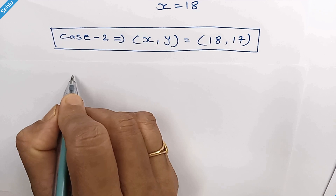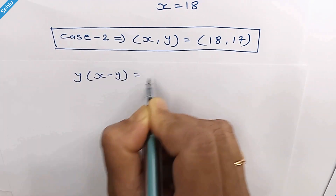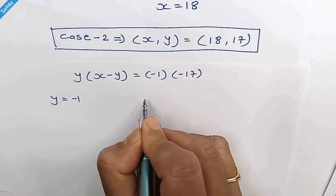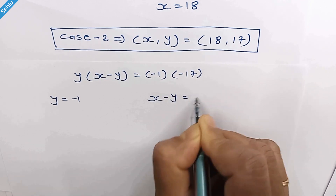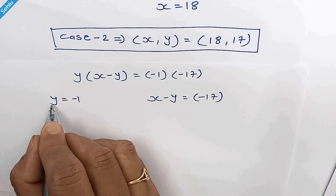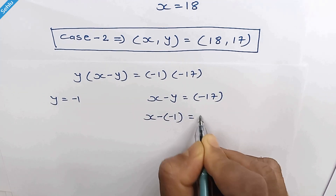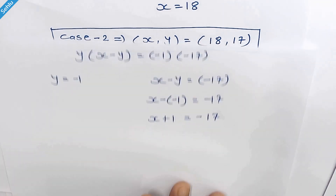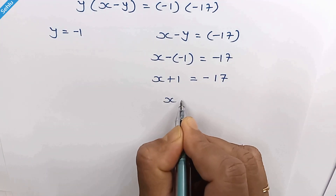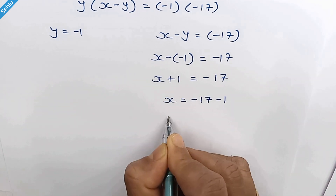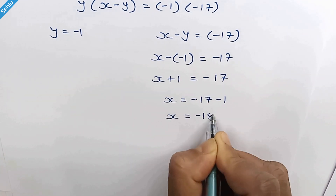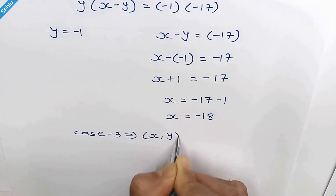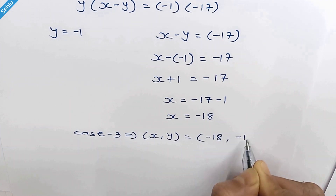For Case 3: negative 1 times negative 17. Comparing, y equals negative 1 and x minus y equals negative 17. Substituting y equals negative 1 gives x plus 1 equals negative 17, so x equals negative 18. For Case 3, x is negative 18 and y is negative 1.